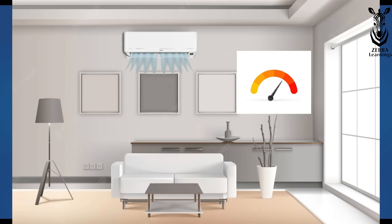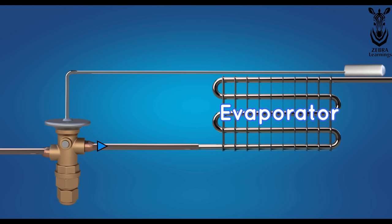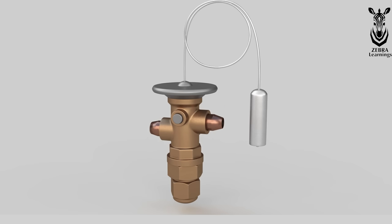After everyone has left that room, the expansion valve will reduce the amount of refrigerant going to the evaporator, as the room does not need more cooling. First, let's know its parts.